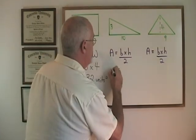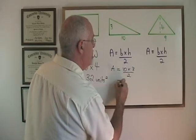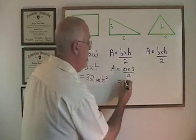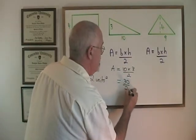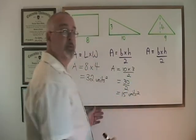We have base 10 times height 3 over 2 which gives 10 times 3 over 2, 30 over 2 which gives an answer of 15 units squared.